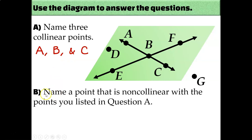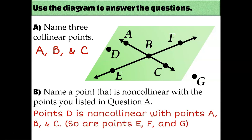But let's stick with A, B, and C for our answer so that we can answer question B. Name a point that is non-collinear with A, B, and C. Remember that non-collinear means that it's not all on the same line. And basically you could pick any of the other points that you see in this diagram because they're not on the same line with A, B, and C. I picked point D, but as it says you could also say point E, F, and G. All of those would be non-collinear with points A, B, and C because you can't connect all four of the points with one single straight line.